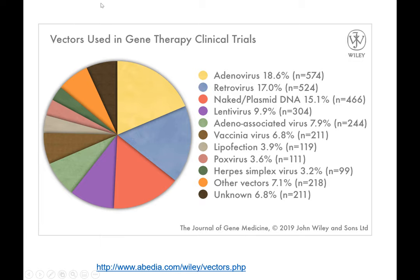Looking at the latest gene therapy clinical trials, you can see lots of different viruses being used: adenovirus, retroviruses, lentiviruses like HIV, adeno-associated viruses, vaccinia — which is the virus used for the smallpox vaccine — other pox viruses, herpes viruses. Lots of viruses are used as a vector, and vector just means a means of delivery for gene therapy.